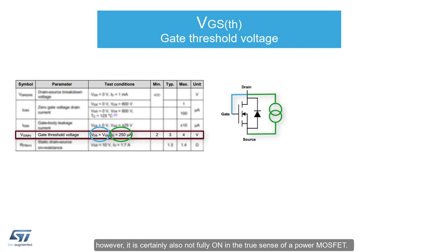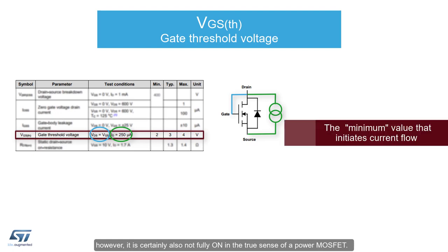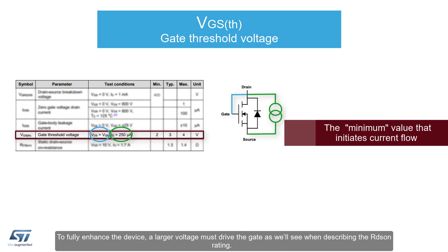However, it is certainly also not fully on in the true sense of a power MOSFET. The threshold voltage is simply the minimum voltage that initiates some drain current flow. To fully enhance the device, a larger voltage must drive the gate, as we'll see when describing the RDS-ON rating.